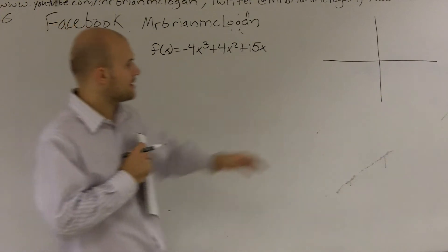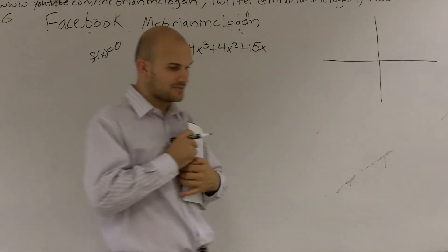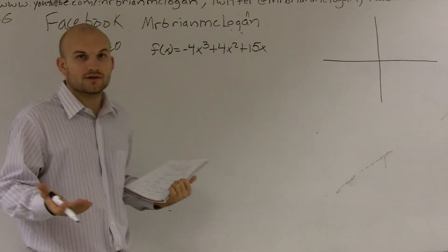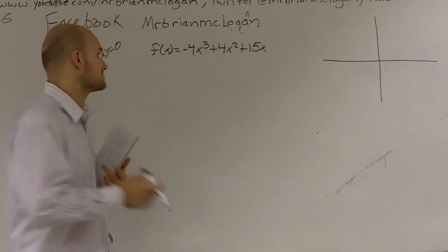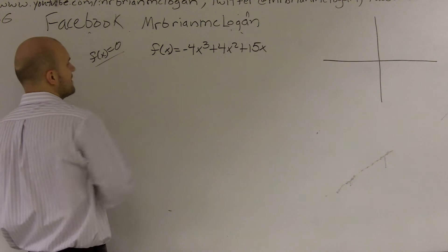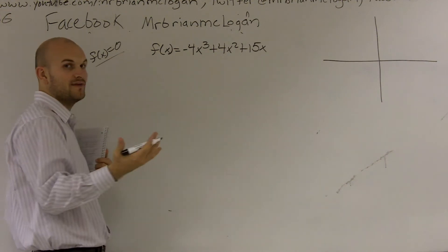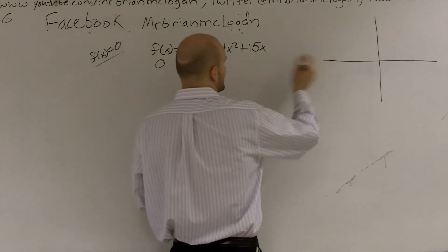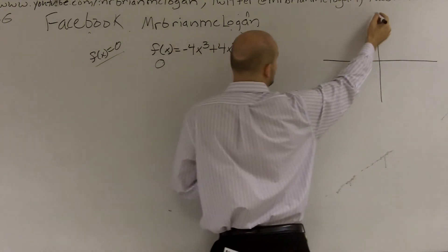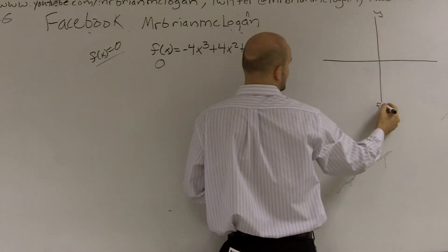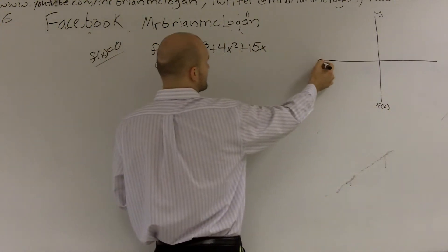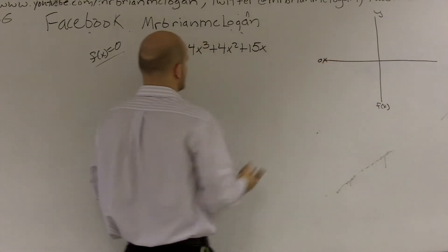So the first thing I want to do is I have my little xy-axis here. First thing I want to do is find our zeros. Remember, our zeros are going to be our x-intercepts. So our zeros are when f of x equals 0. That means our output value, which is f of x, is going to equal 0. And remember, that's the same thing as here's your y-axis. It's kind of the same thing as your f of x-axis. It's dealing with your output. So when that value is 0, we're on the x-axis.